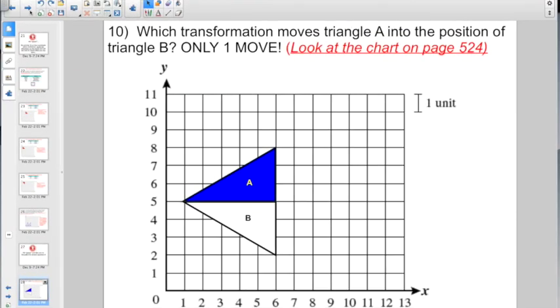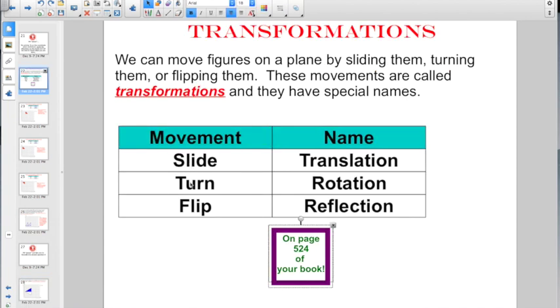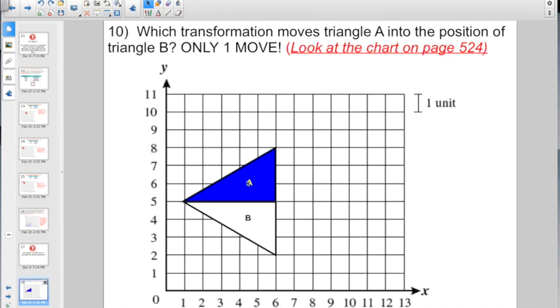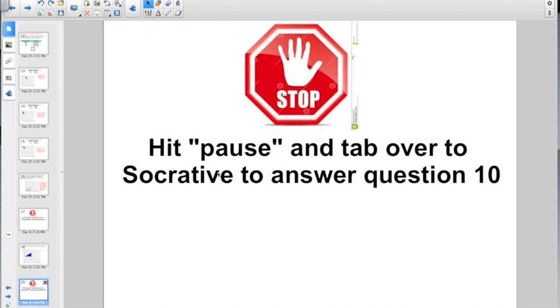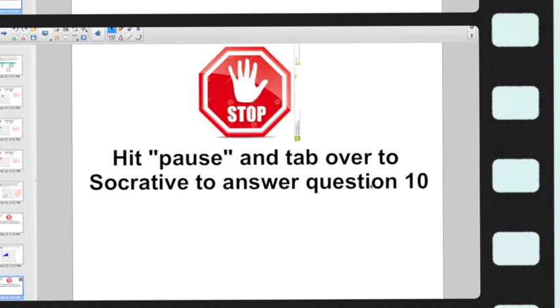All right, welcome back. Question number 10 says, which transformation moves triangle A into the position of triangle B in only one move? You might want to look at your chart back on page 524. What type of move is going to be able to get that from A to B? Go ahead, hit pause, tab over to Socrative to answer question 10.